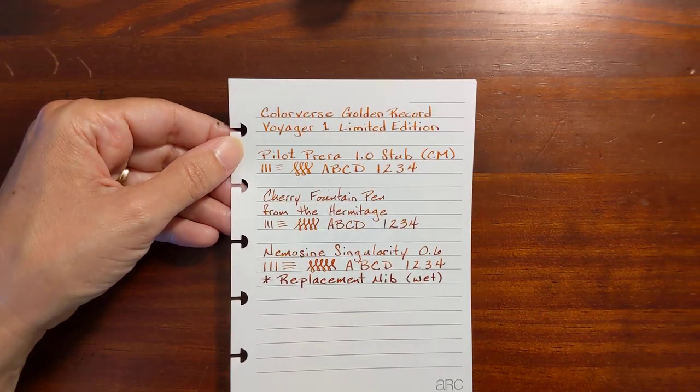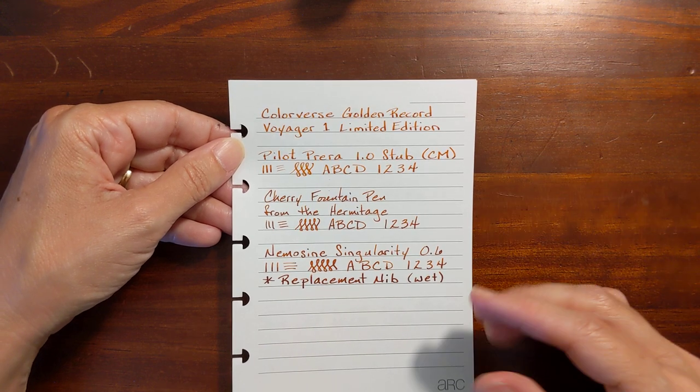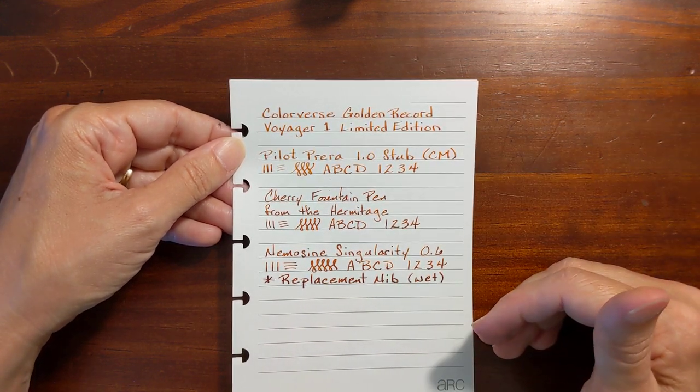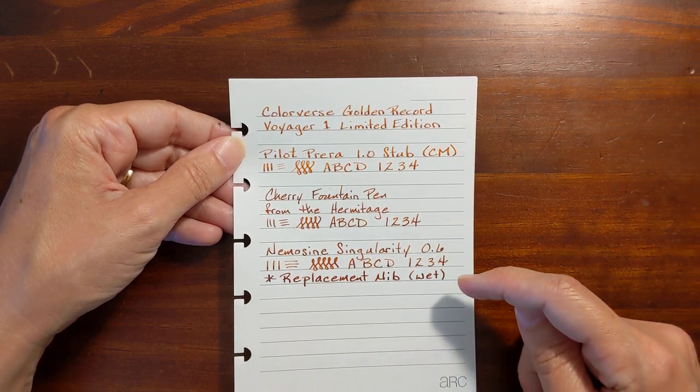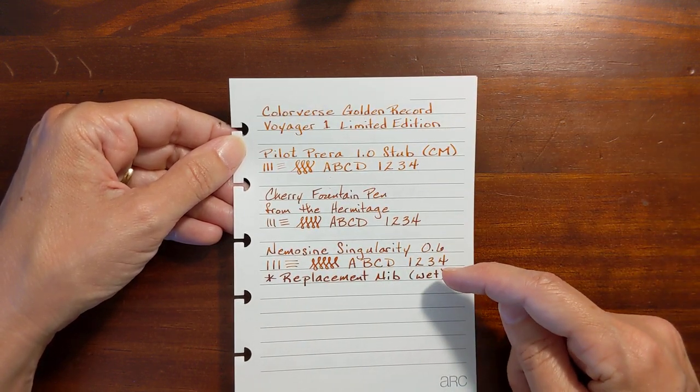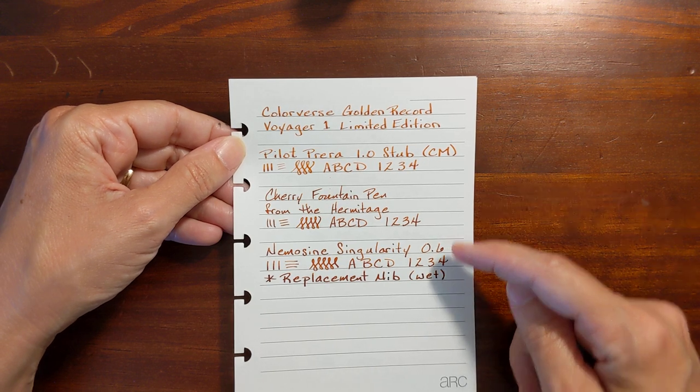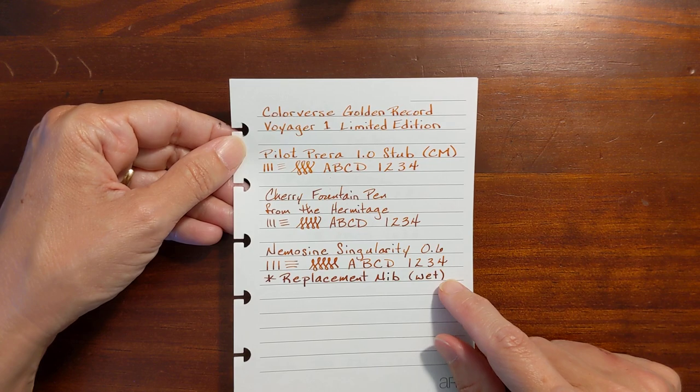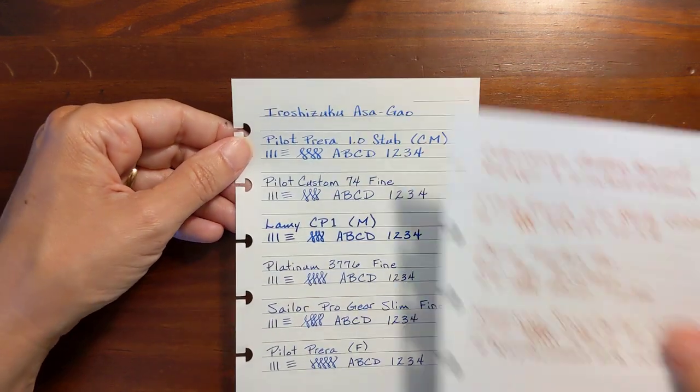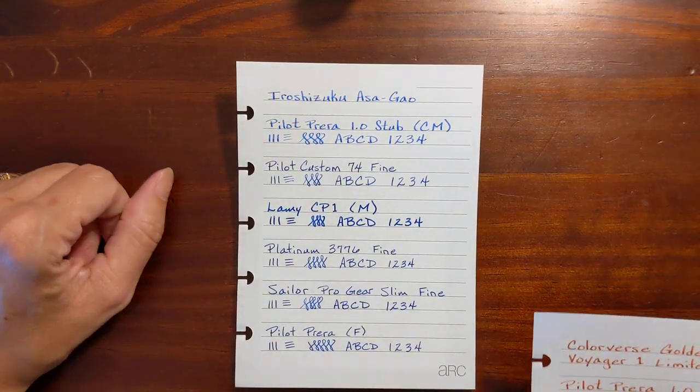This is Colorverse Golden Record. I was looking through my collection of ink samples and to me this one shows the most drastic change in color depending on what nib you use it in from orange to a brown color and when I looked at Asa-gao.